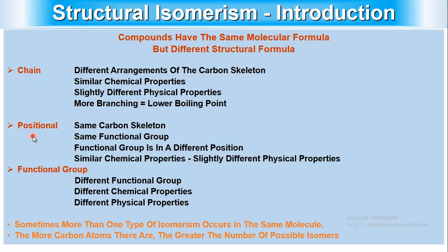The second type is position isomers. They have the same carbon skeleton and the same functional group, but the functional group is attached at a different position. They have similar chemical properties and slightly different physical properties.